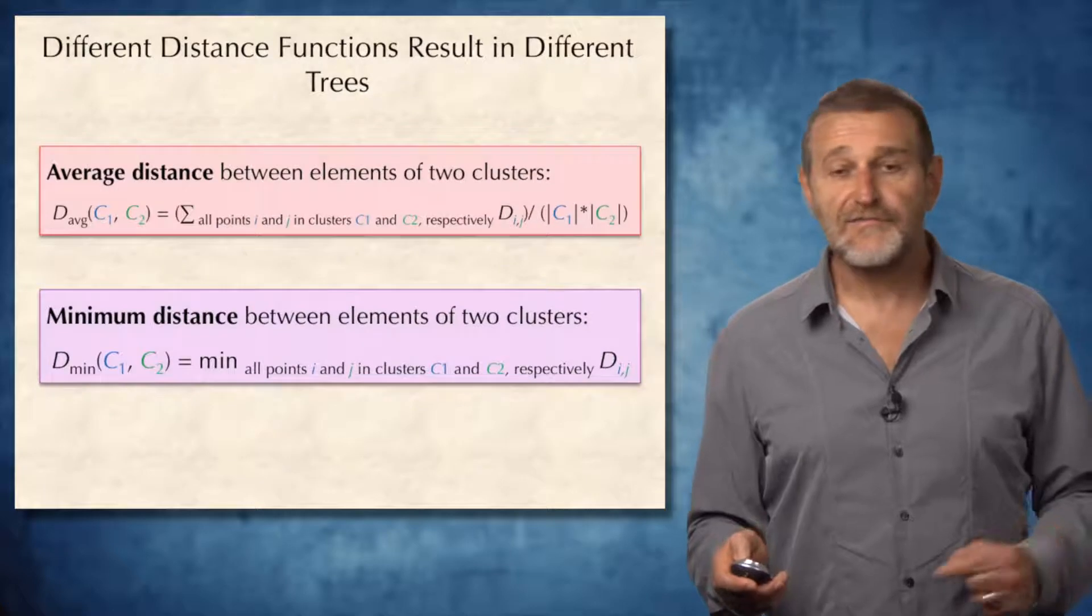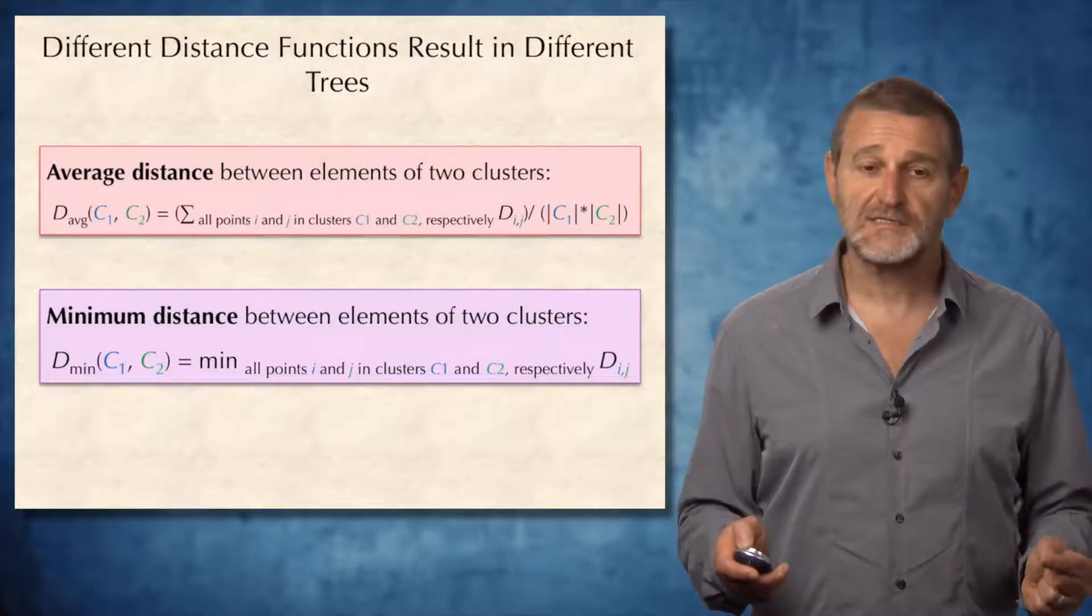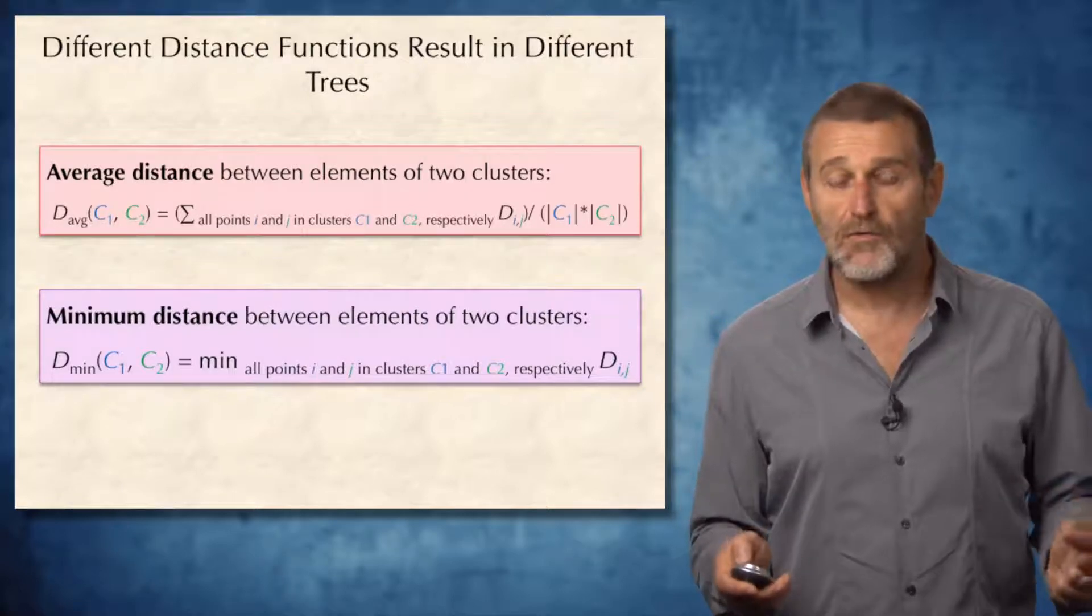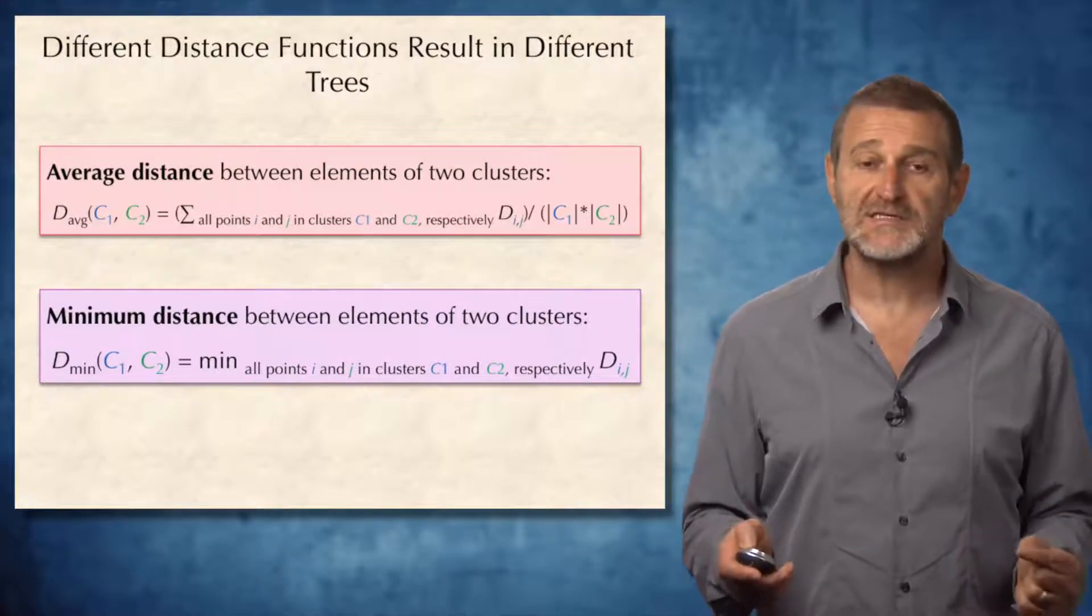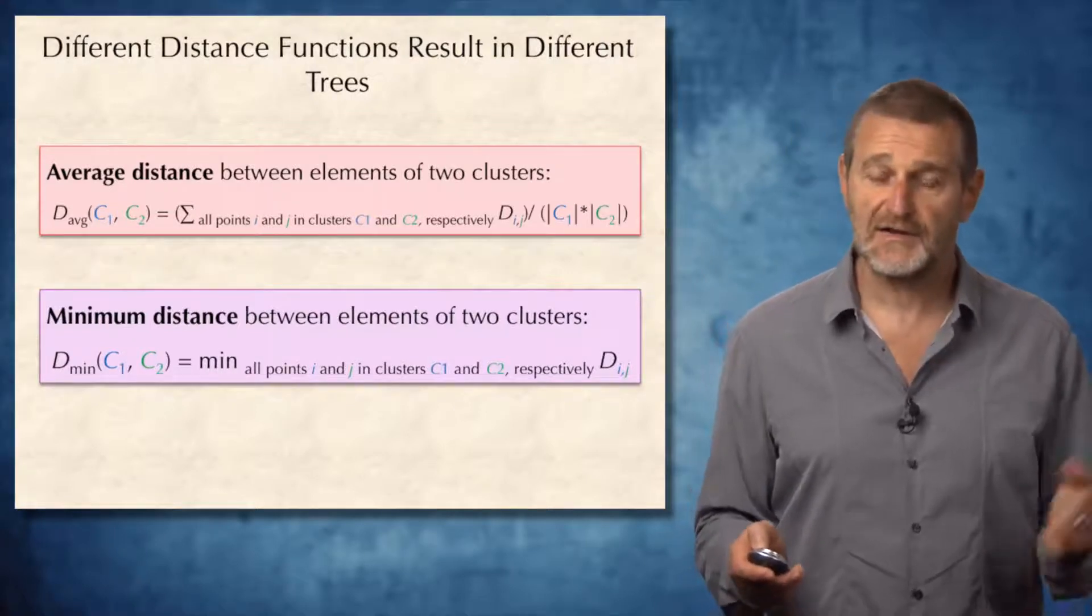And there are different approaches to clustering. For example, one can compute clusters using average distance between elements of two clusters, or by using minimum distance between elements of two clusters. Of course, this may result in different clustering approaches.